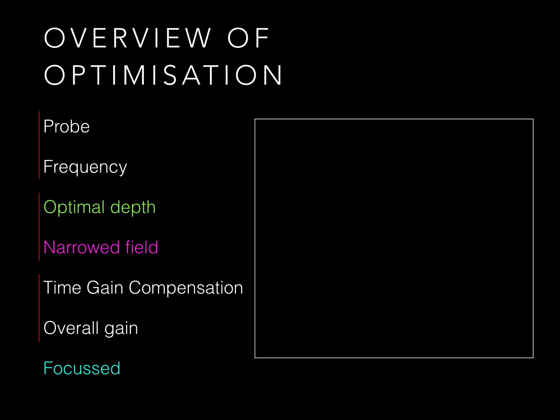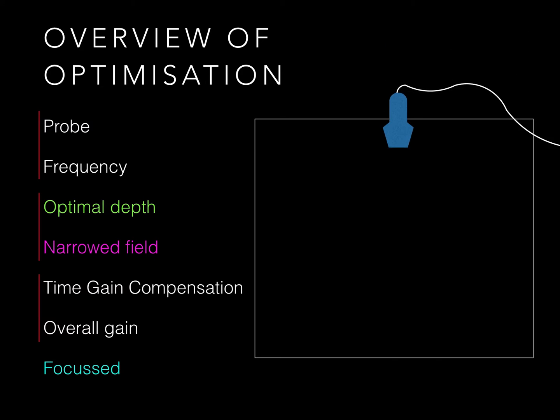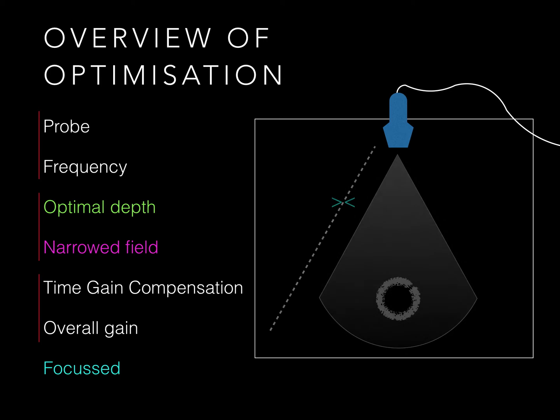To optimise an image, firstly choose the correct probe and frequency. Ultrasound is just sound, so like the bass from a neighbour's house party, low frequencies penetrate well. That means low frequencies can image deeper structures. On the other hand, high frequencies give better resolution for superficial structures.